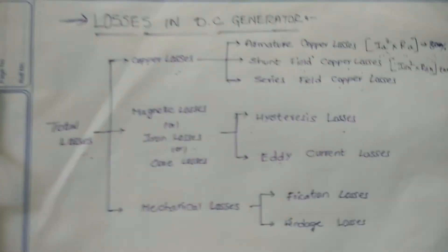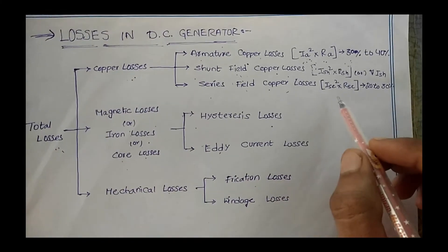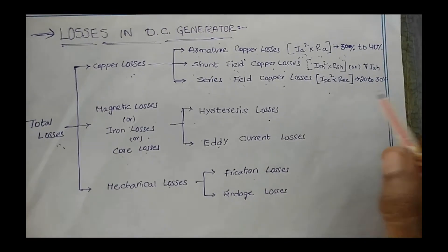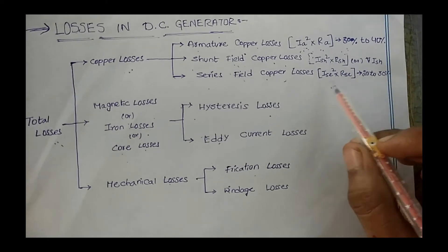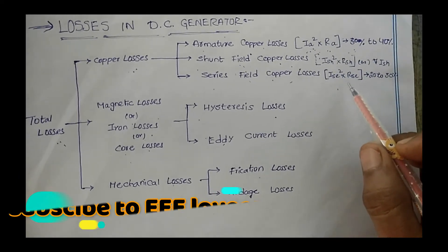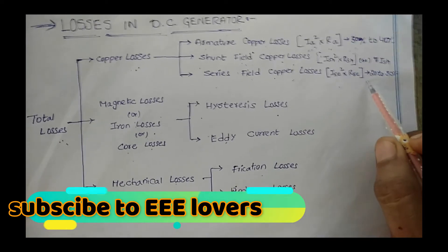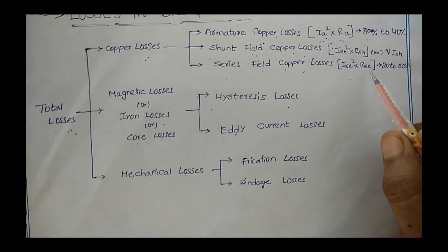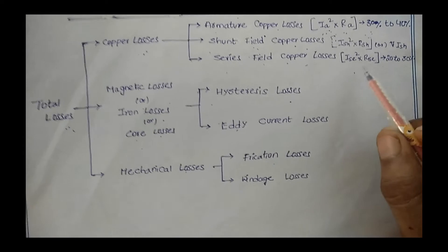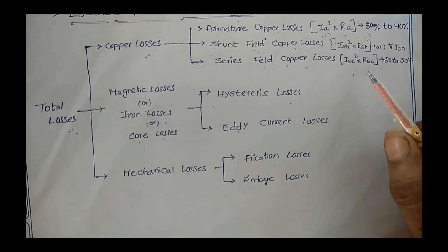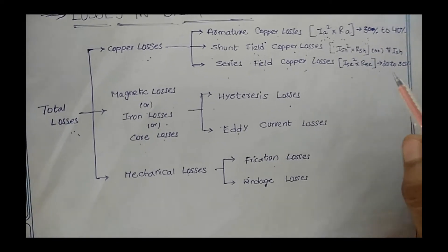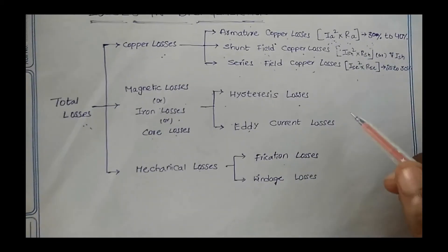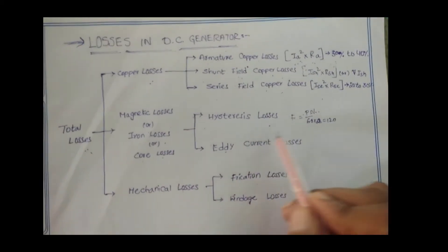Next are series field copper losses. In the case of a series generator, this loss is equal to I_se² × R_se, where R_se is the resistance of the series field winding. The field copper losses are about 20 to 30 percent of full load losses.